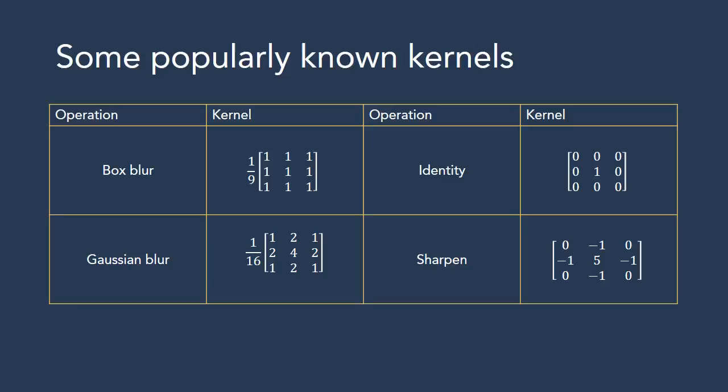Some popularly known kernels are those for box blur, Gaussian blur, identity, and sharpen. Box blur is identified by 1/9 times a 3×3 matrix of ones, whereas Gaussian blur is identified by 1/16 times the matrix [1 2 1 / 2 4 2 / 1 2 1]. Gaussian blur lays more weight on pixels that are directly adjacent — top, bottom, left, and right — compared to diagonal ones, whereas box blur puts equal emphasis on all surrounding pixels. The identity kernel returns the same input image unchanged, and sharpen increases the contrast of the current pixel compared to its surrounding pixels.